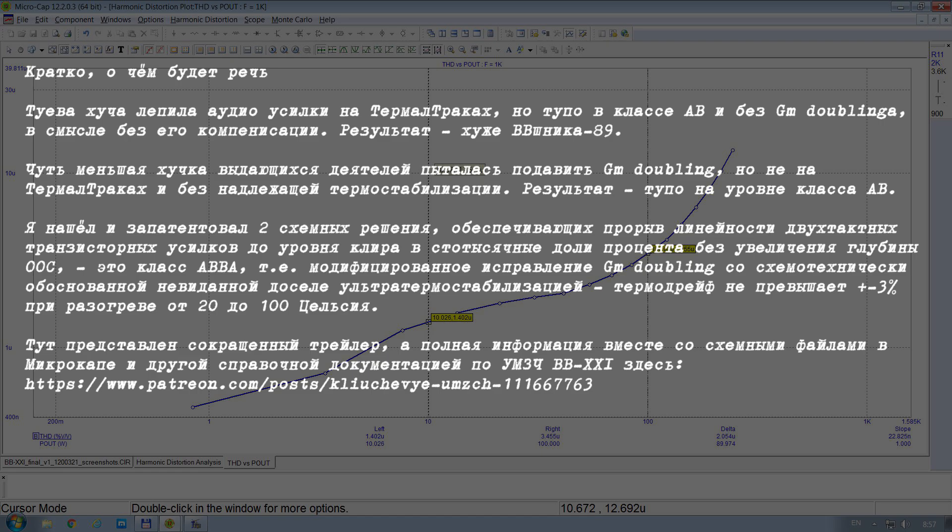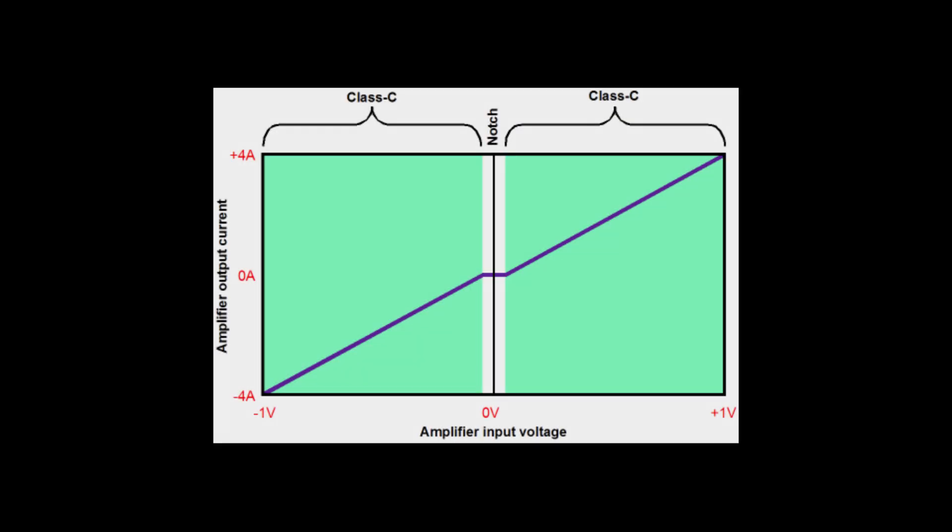Привет! Все мы с детства знаем, что главный недостаток класса B — это начальная ступенька, и поэтому уже давно все применяем класс AB. Но оказалось, что и у класса AB есть своя обратная ступенька.